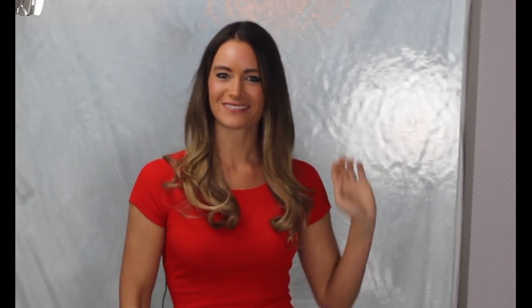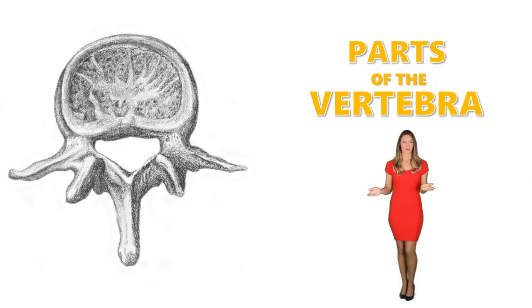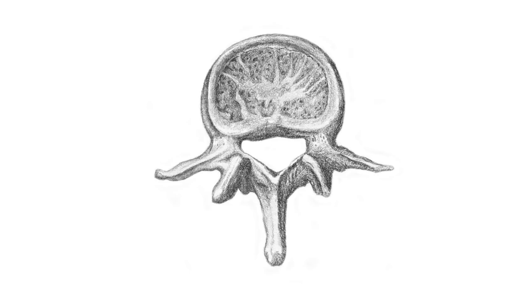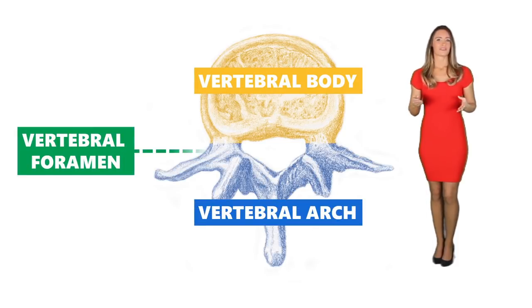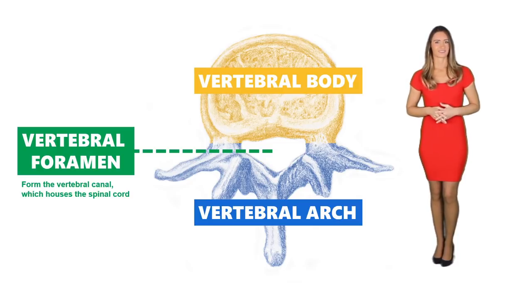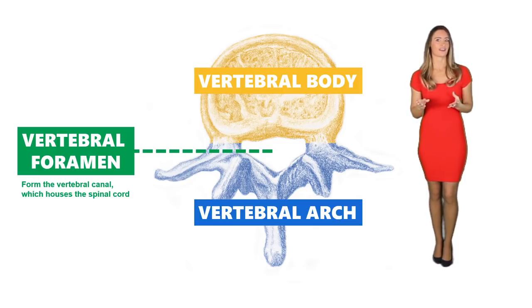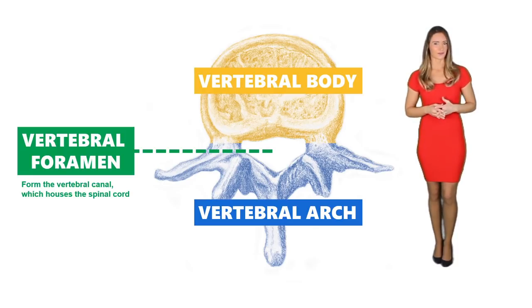Alright, without any further ado, let's get right into the video. Parts of the vertebral spine. The typical vertebrae is made up of a vertebral body and a vertebral arch. Between the body and the arch is the vertebral foramen. All the foramina of each vertebrae line up to form the vertebral canal, which houses the spinal cord.